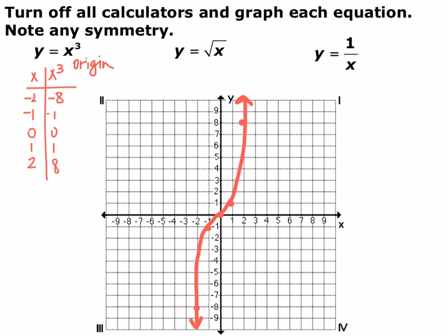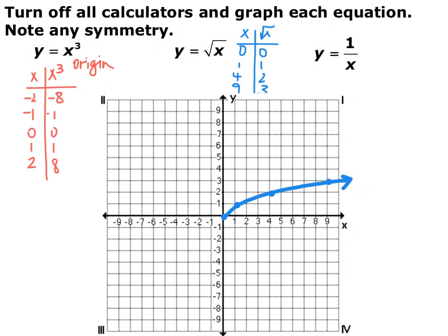Go ahead and pause the video and do y equals the square root of x. For y equals square root of x, I chose easily square-rooted numbers. For my x-coordinates I picked 0, 1, 4, and 9 because they're all perfect squares. Their matching y-coordinates were 0, 1, 2, and 3. You end up with a little curve that looks like this. For this one, there's no symmetry — no matching over the x-axis, no matching over the y-axis, and no matching over the origin.